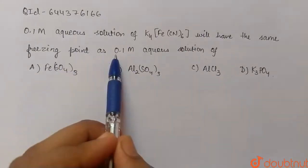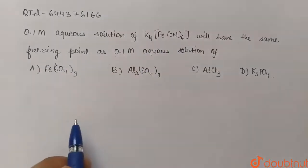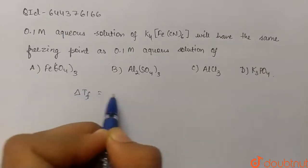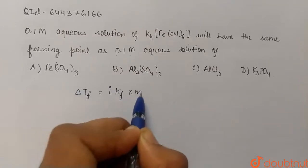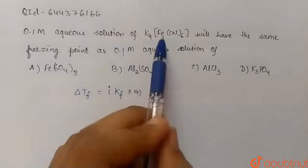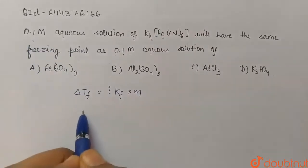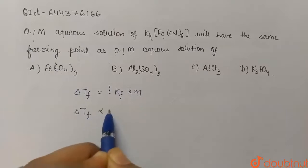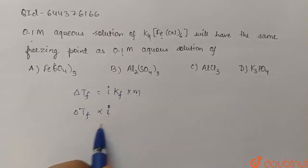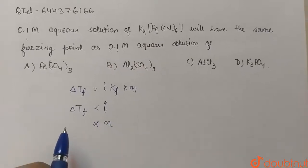Here we consider ΔTf, and the formula is ΔTf = i × Kf × m. Since the molality is the same (0.1 molar) for both the unknown solution and the K₄[Fe(CN)₆] solution, we can say that ΔTf is directly proportional to i, the van't Hoff factor, which in turn is directly proportional to the number of ions produced upon dissociation.